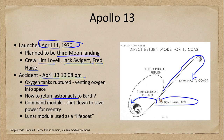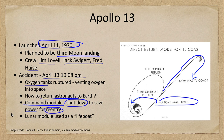However, because of the loss of oxygen in the command module and the need to save power, the command module had to be shut down. That saved power for re-entry. The command module itself is the only way to get those astronauts back to earth.